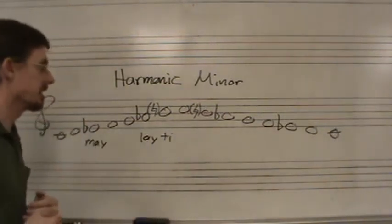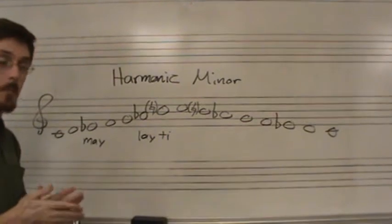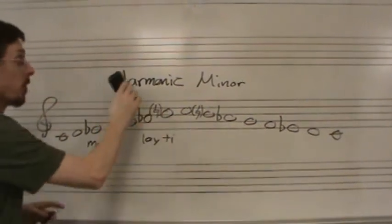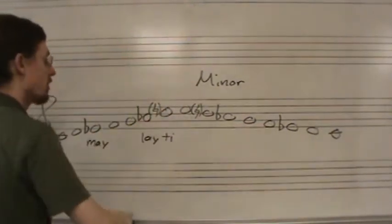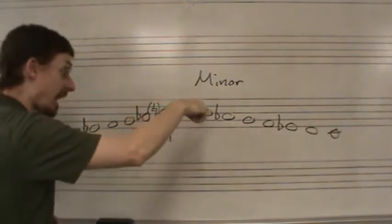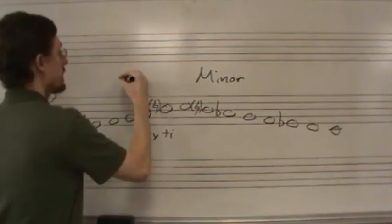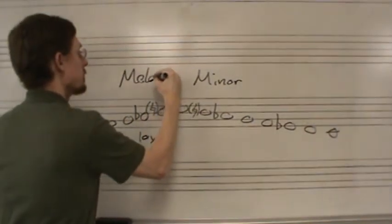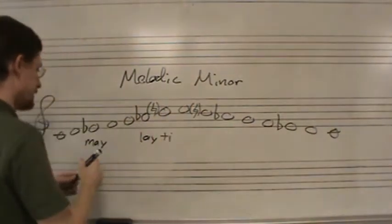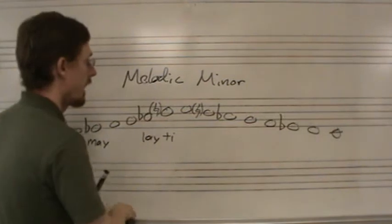All right. So, that is the harmonic minor mode. Let's do the one more that we have. And you may be wondering why did I write this scale ascending and descending? Because it's the same either way. Okay. This is the reason why. We now go to the melodic minor mode.